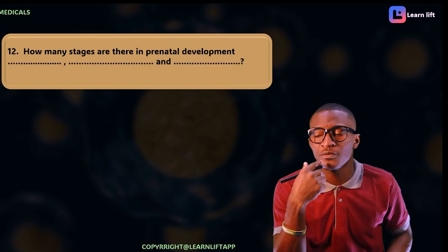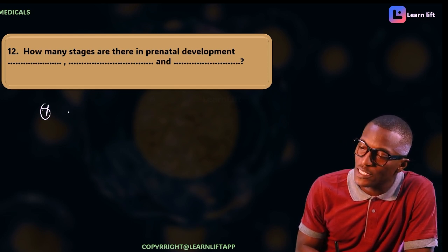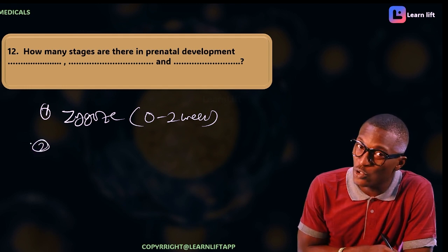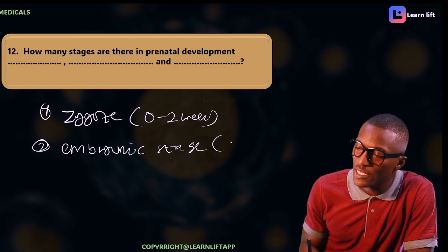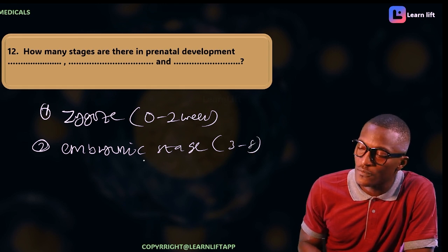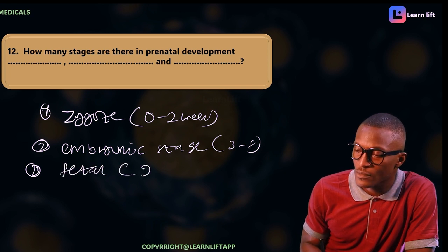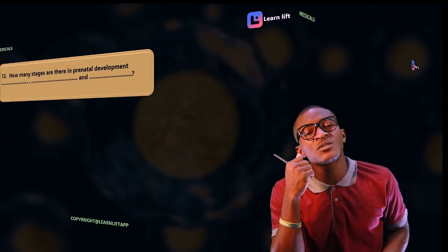Let's review the three stages of prenatal development. Stage one is the zygote stage, from zero to two weeks — also called the pre-implantation stage. Stage two is the embryonic stage, from three to eight weeks. Stage three is the fetal stage, from nine weeks to nine months. Those are the three prenatal stages.